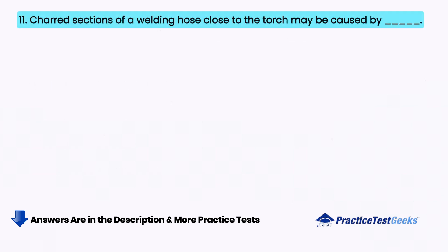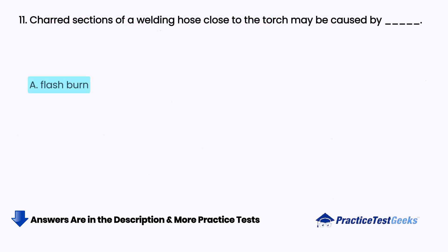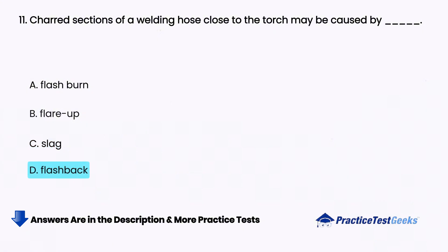Charred sections of a welding hose close to the torch may be caused by blank. A. Flash burn, B. Flare up, C. Slag, D. Flashback.